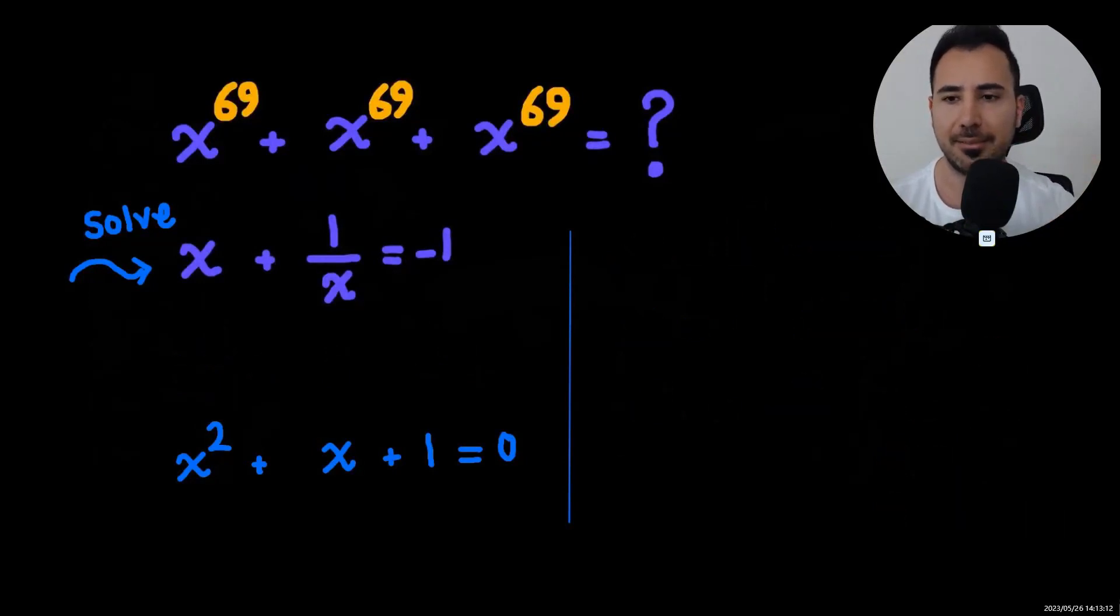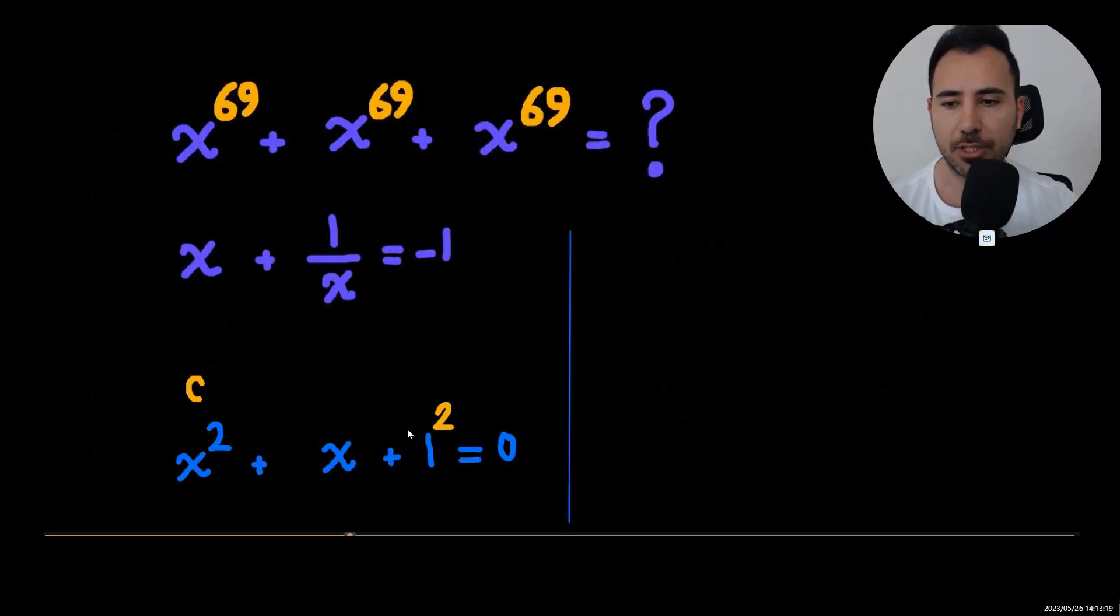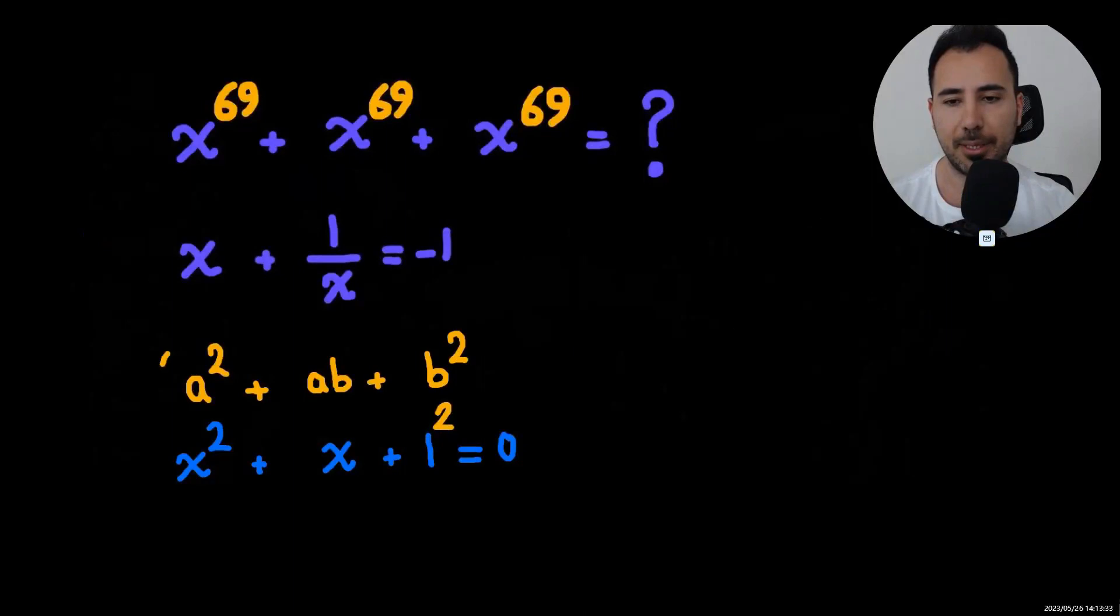So you see if I have this one squared, I hope it reminds you of a formula. What formula? Let's look. If a is x and b is one, this is the formula, and if we multiply it by a minus b, what do we get? a cubed minus b cubed, right.